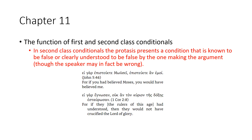In second class conditionals, the protasis presents a condition that is known to be false — or clearly understood to be false — by the one making the argument, though the speaker may in fact be wrong. For example: 'Gar ei episteúete Mōsei, episteuete an emoi' — 'For if you had believed Moses, you would have believed me.' And: 'Gar ei egnōsan, ouk an ton kurion tēs doxēs estaurōsan' — 'For if the rulers of this age had understood, they would not have crucified the Lord of glory.' You can identify these as second class conditionals by the use of the particle an and the aorist forms.